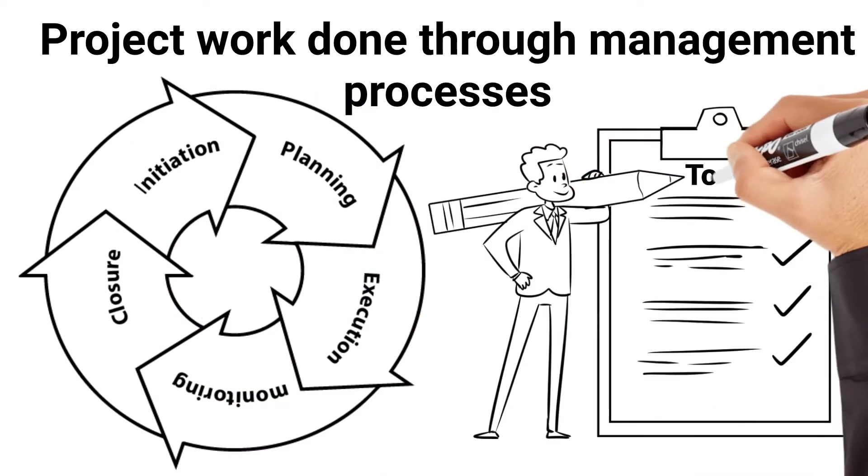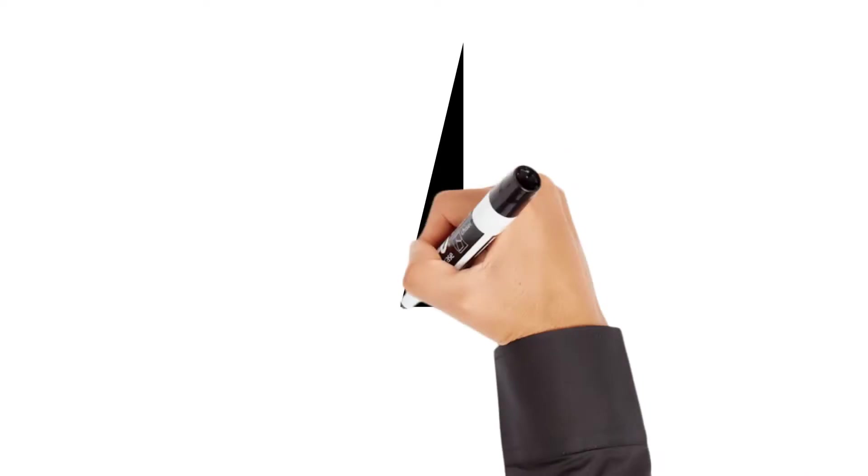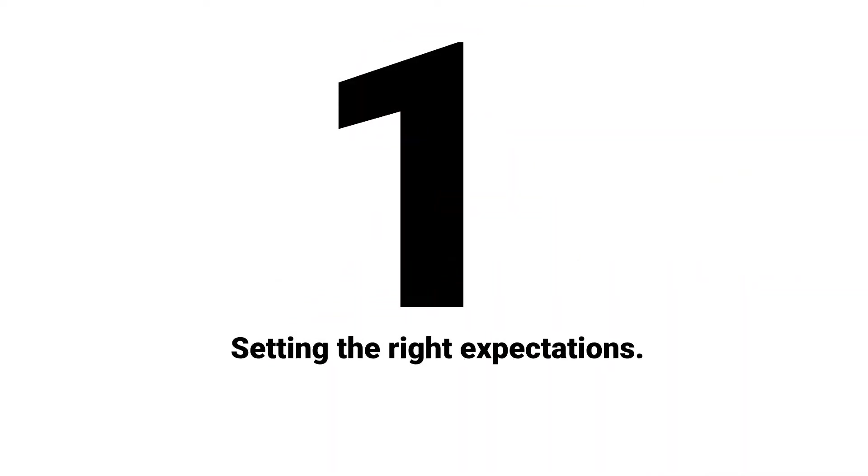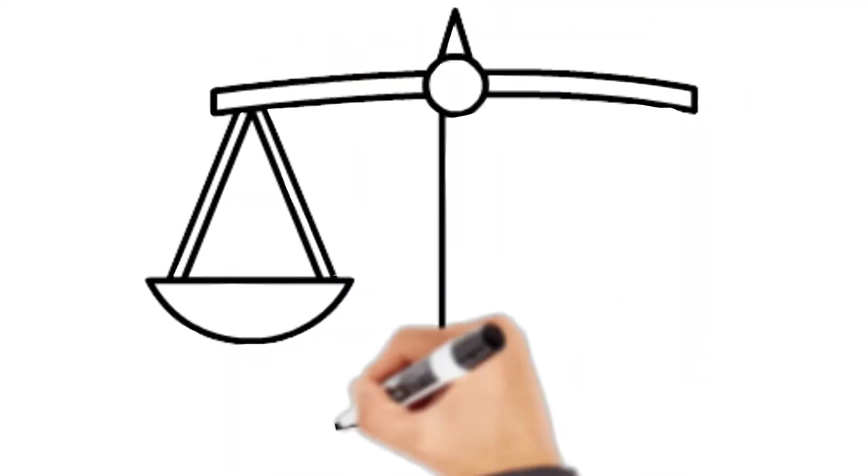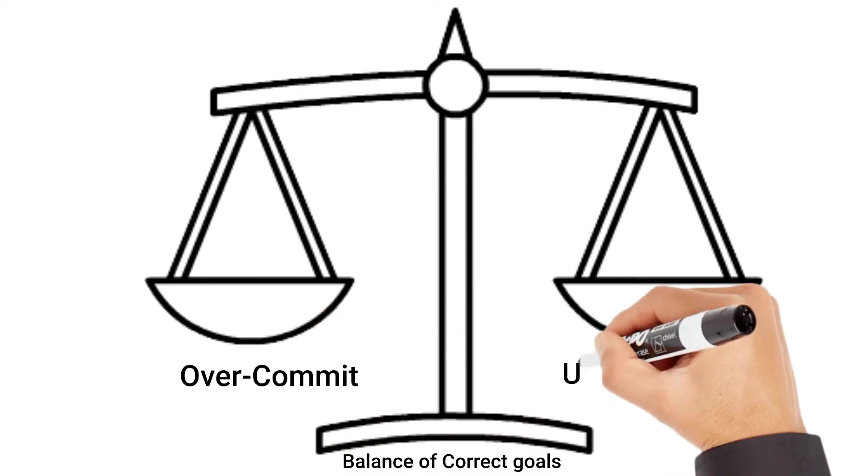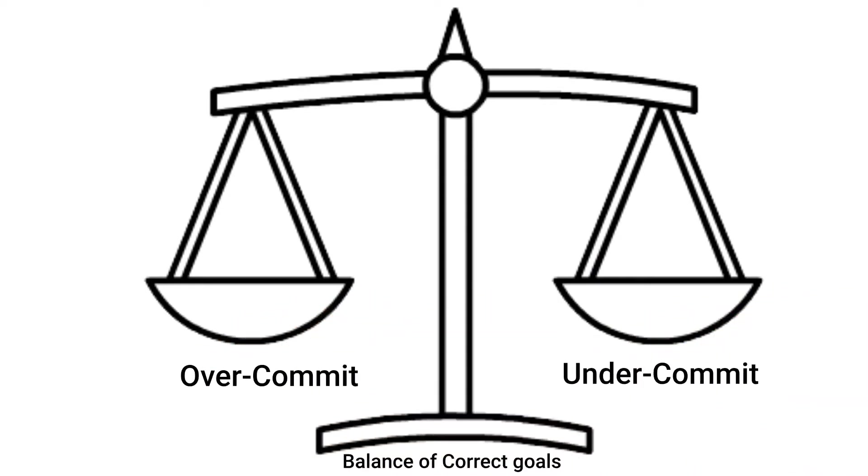Here are the top 10 most common activities performed through project management. First one is setting the right expectations and project's objectives. This is the most challenging aspect of project management to set the correct goals. You don't want to commit to delivering less than you know is achievable. Also, you don't want to promise more than you can realistically deliver. Without right expectations, you are just setting the project up for certain failure.